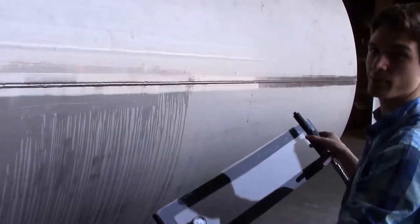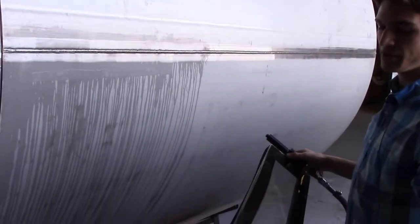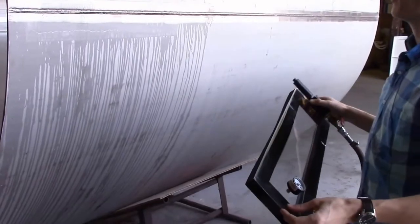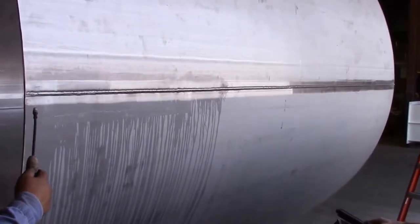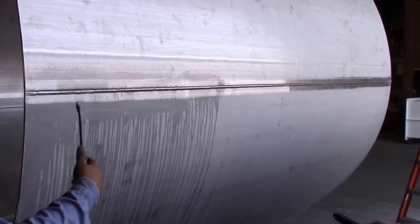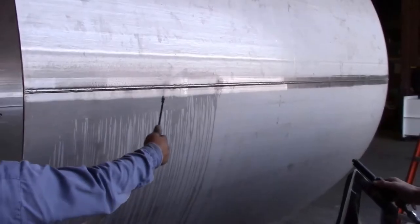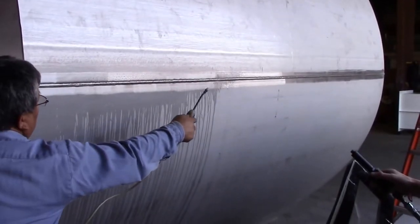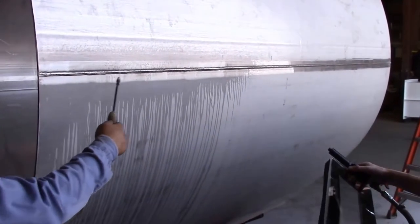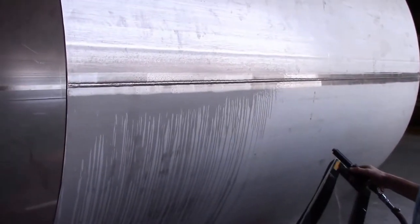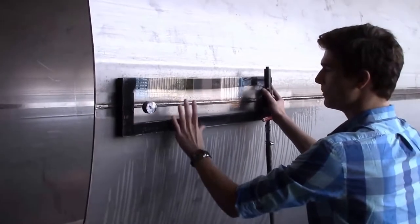All right, so this here is a vacuum box and what you want to do with this is find your weld and have someone spray soapy solution on it, and then you'll slap this on and turn it on. It'll pull a vacuum and if there's any leaks in the weld then you'll see bubbles come out.